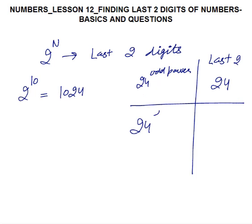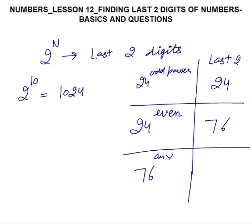For 24 raised to an even power, the last two digits will be 76. And very importantly, 76 raised to any power — 1, 2, 3, 4, 59, 69, 159 — the last two digits will always be 76. There is no need to memorize this; you can verify with a calculator. So: 24 odd power → last two digits 24; 24 even power → last two digits 76.